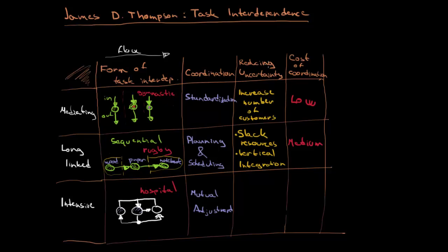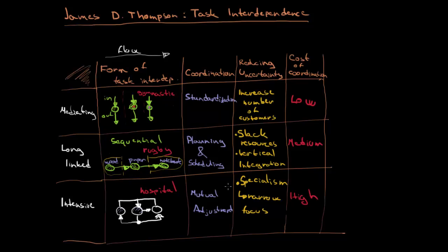To reduce uncertainty in this kind of environment, we use specialism — creating a narrow focus. Imagine a company focused only on cancer treatment. Because operating this kind of organization is very expensive, the cost of coordination is very high. By specializing narrowly, we can reduce both the coordination costs and the environmental uncertainty.